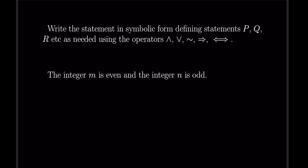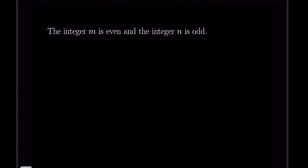Welcome to the third example video for the introduction to proof writing series. This is based off of problems you might want to practice after the third lecture video. We'll be taking mathematical statements and rewriting them in symbolic form, defining open sentences or statements p, q, and r as needed, and linking them together with the operators AND, OR, NOT, the conditional, and possibly the biconditional.